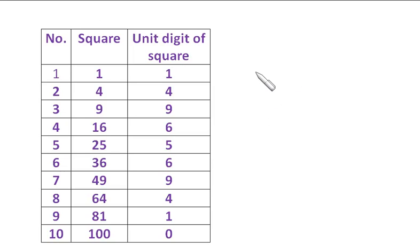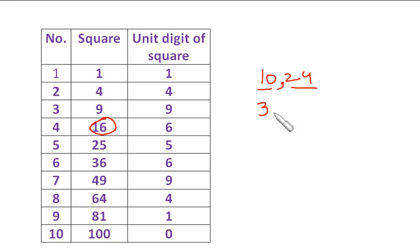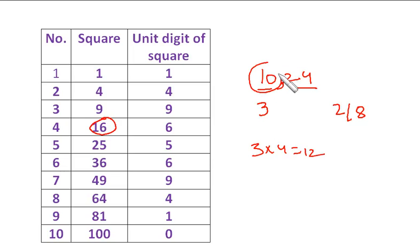Take 1024. Make the pairs: 24 and 10. Since 10 lies between squares of 3 (=9) and 4 (=16), the tens digit is 3. For the unit digit, since 4 is the unit digit, the choices are 2 or 8. Multiply 3 by its next number: 3×4=12. Since 10 is less than 12, choose the smaller number. So 32 is the square root of 1024.